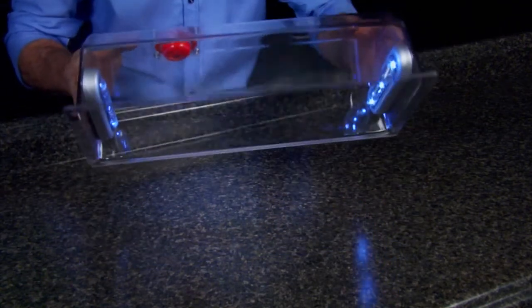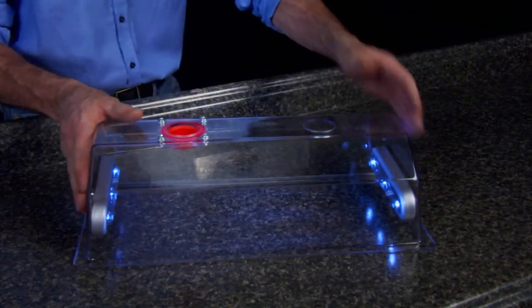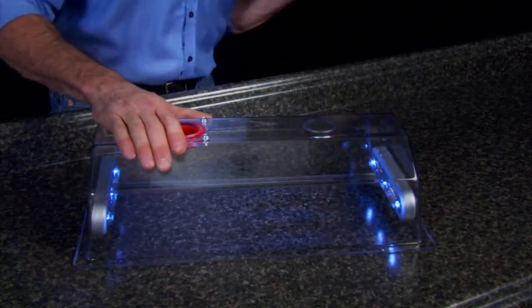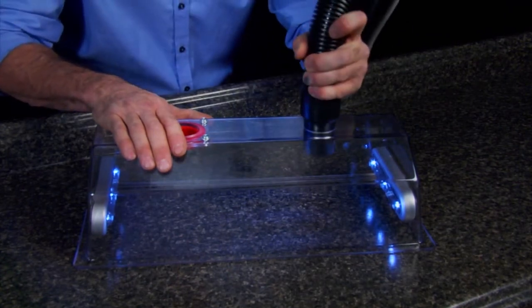Now, using compressed air to clean ducts has been done before, but never like this. The key to the RamAir system is the Clearview vacuum box. The vacuum box provides a seal around the register opening to contain dust and debris while providing a secure attachment for the vacuum hose.